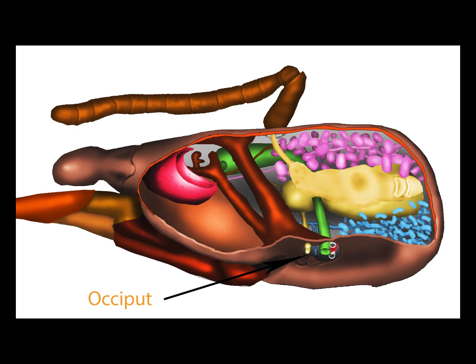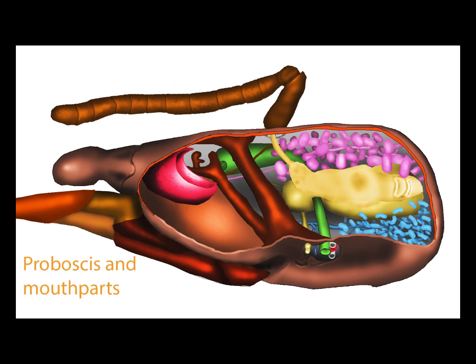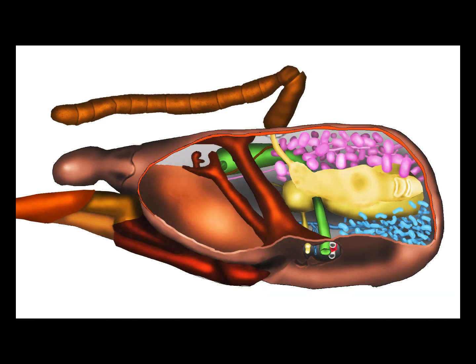Here we can see the aorta, two tracheal branches, the oesophagus, the ducts of the thoracic salivary glands that we'll be discussing, and the two main trunks of the nervous system. In front of the head we have the antenna, below we have the proboscis and mouth parts sitting just behind the mandibles.